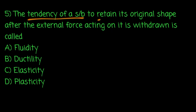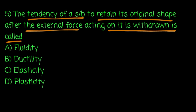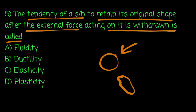The tendency of a substance to retain its original shape after the external force acting on it is withdrawn is called — the substance returns to its original shape after the external force is removed. The size and shape remain. For this shape, the shape must be changed, and when the external force is removed, the shape returns — that property is called elasticity. Elastic material is the concept. Elastic limit is the point.